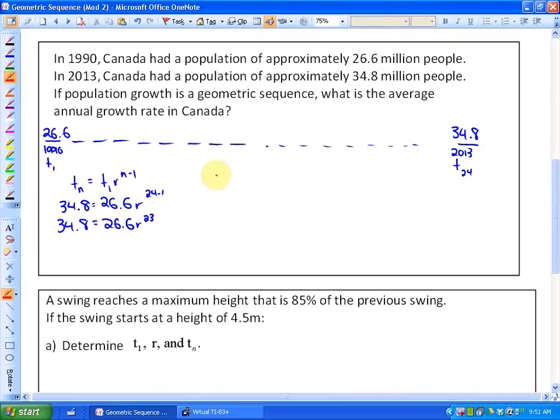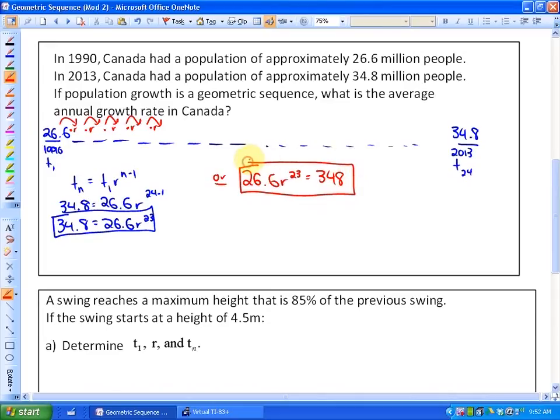Or, if you want to use more of a pattern method, you get to the same place. You could ask yourself, how many ratios are there in order to get to the last term? In this particular case, to go from 1990 to 2013 is 23 ratios because it's 23 years later. So if you're not using the term numbers, we know that 26.6 times the ratio 23 times is equivalent to 34.8. If you investigate these two formulas, they're actually identical.